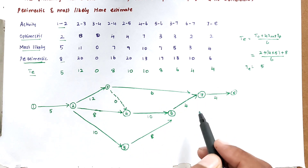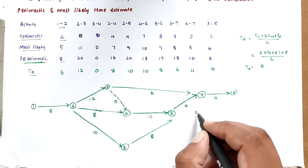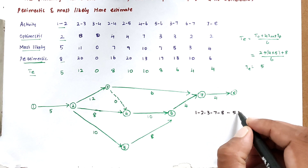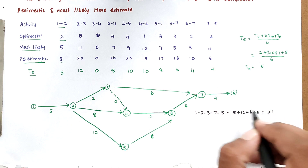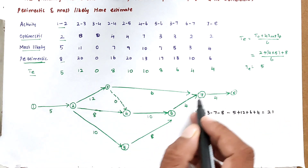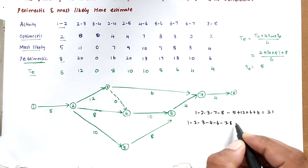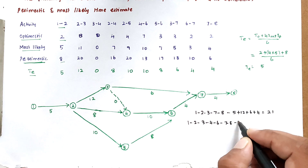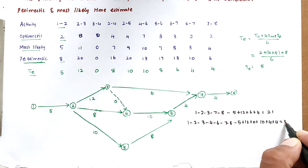Now we find the different paths in the network diagram to determine the maximum (critical) duration. Path 1: 1-2-3-7-8, with duration 5 + 12 + 6 + 4 = 27. Path 2: 1-2-3-4-6-7-8, with duration 5 + 12 + 0 + 10 + 4 + 4 = 35.